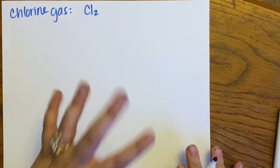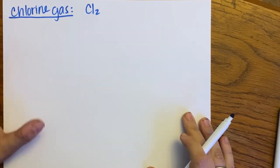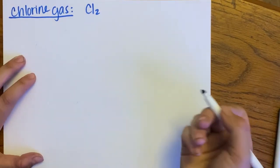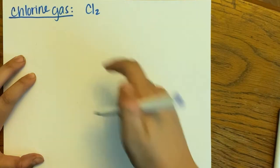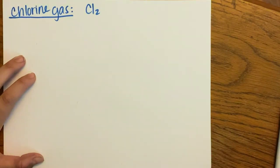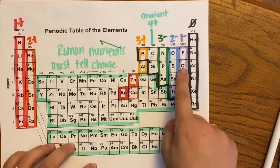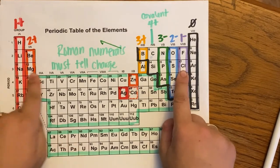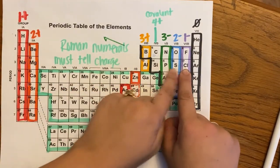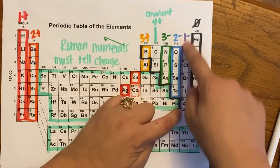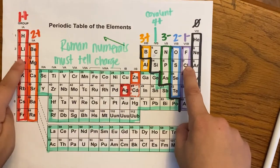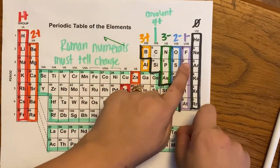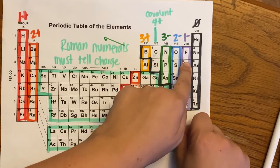Let's look at how to bond these things. There are rules, but I think it would be best to first see an actual example so you can visualize it. Chlorine gas is Cl2, and we're going to look at that. Chlorine is on my third period, so that means it has three electron shells, and it's right here in the halogens — one, two, three, four, five, six, seven valence electrons.